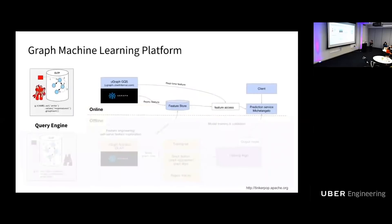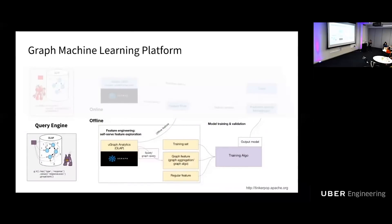For the graph machine learning platform, we built two types of query engines. First is an OLTP query, similar to API calls — you can get graph features for a certain user in real time. The second is called OLAP, similar to Hive — you can run a batch job and get features for a group of users offline. Both real-time and offline features can be saved in a feature store and passed to Uber's machine learning platform for building machine learning models.